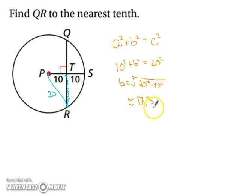It's to the nearest tenth so we're going to stop there. Alright, well, if TR is 17.3, we want to know what QR is. Well, if that's 17.3, then that means this one is 17.3. So we can merely just double that and we end up with about 34.6.